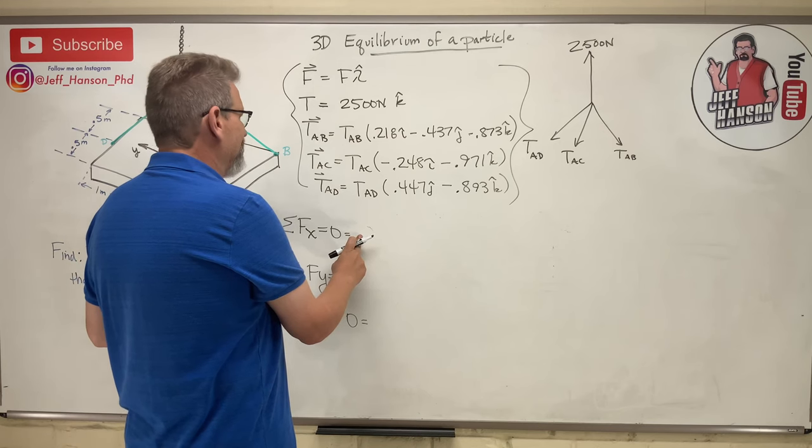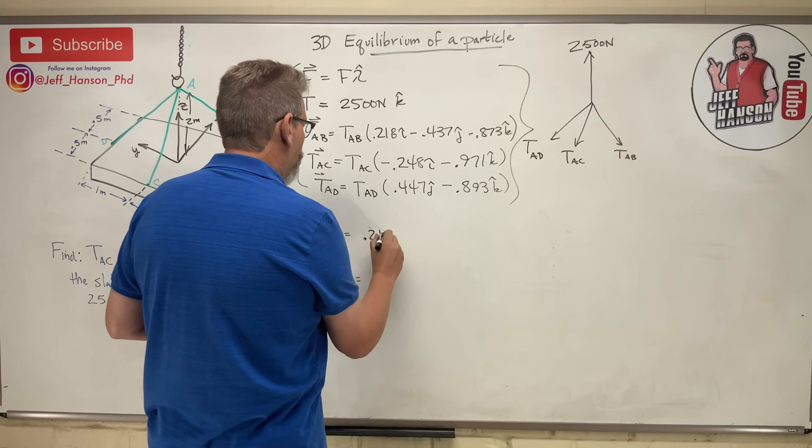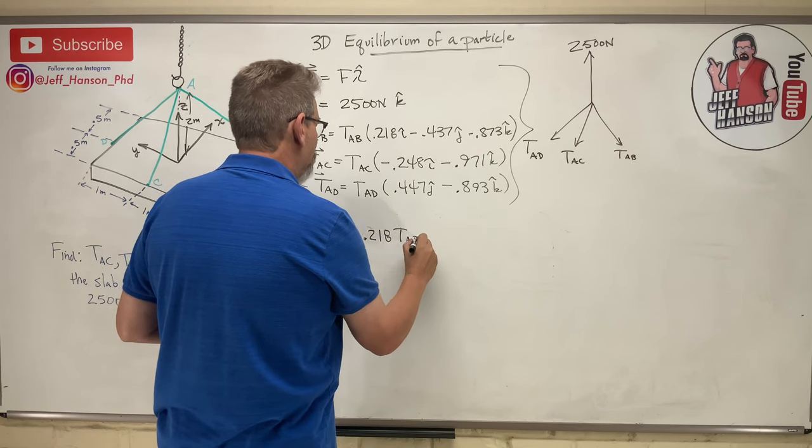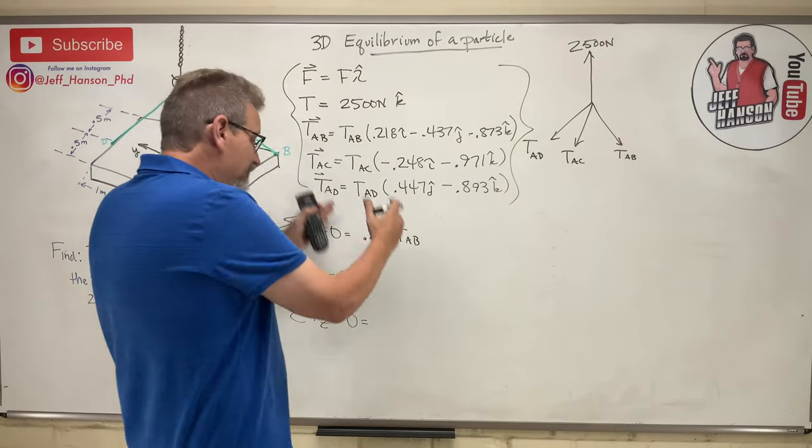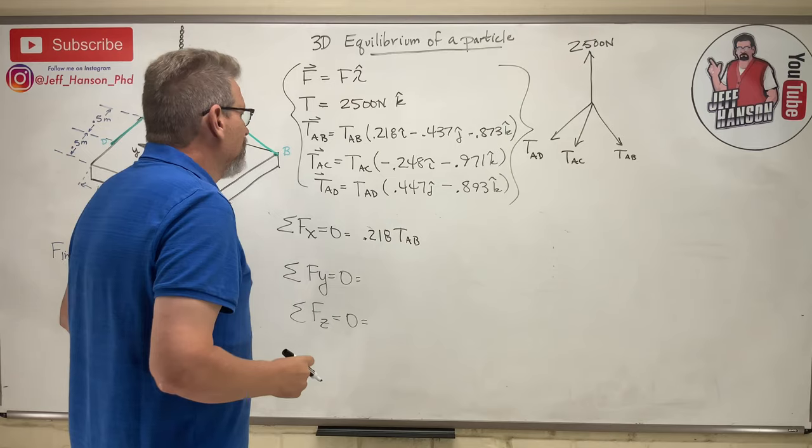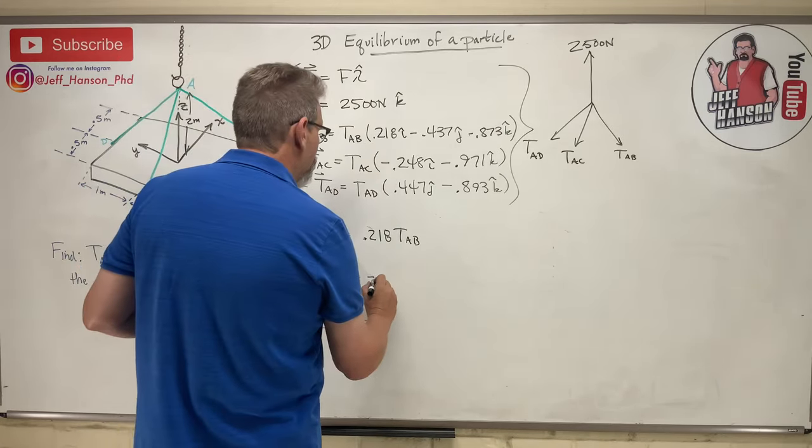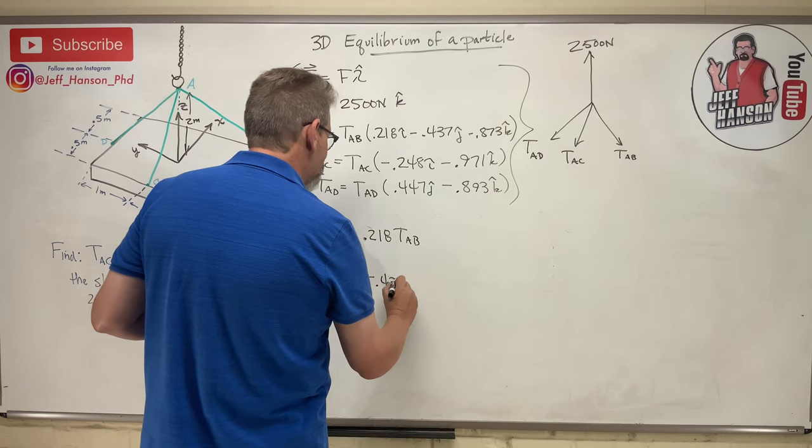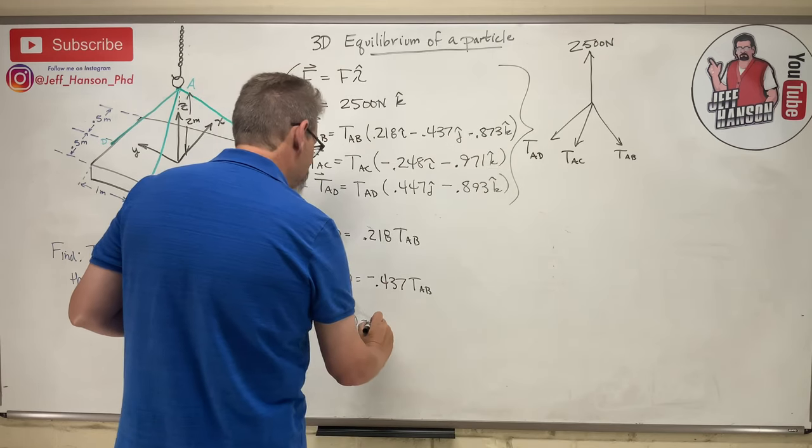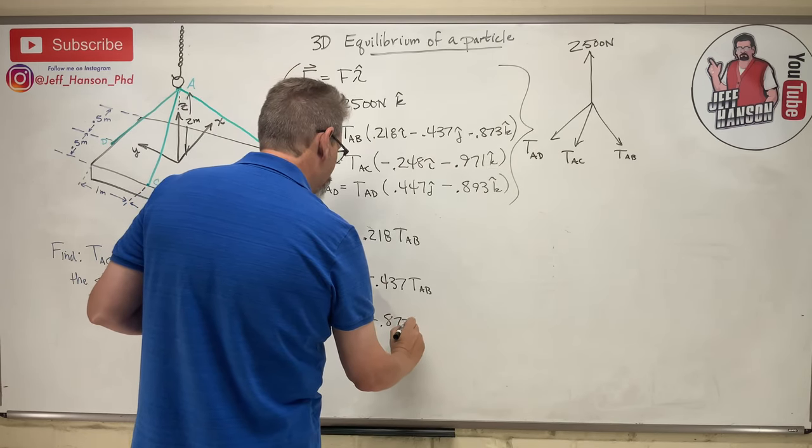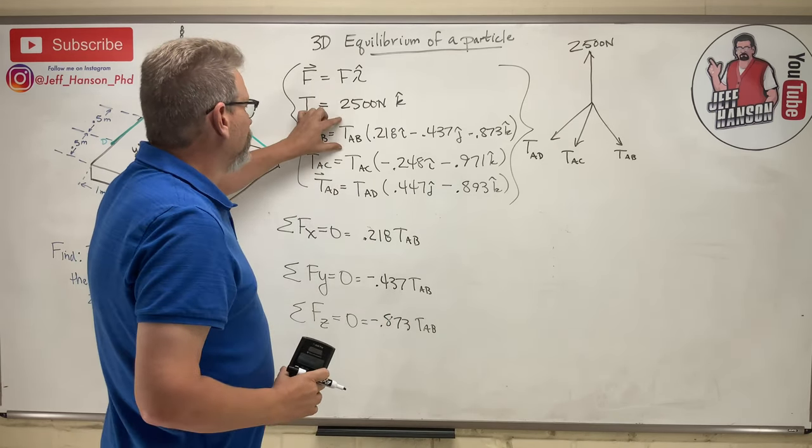So in the i hat we have 0.218 TAB. And again, I'm going to be very careful and keep all this tabulated in the correct columns. So in the Y for TAB is negative 0.437 TAB, and in the K is negative 0.873 TAB. So there's all the TABs. Done.